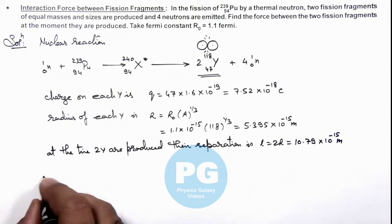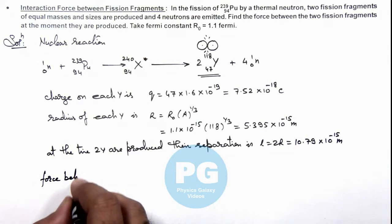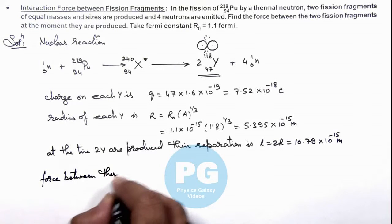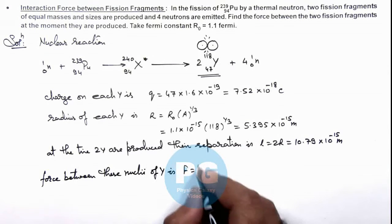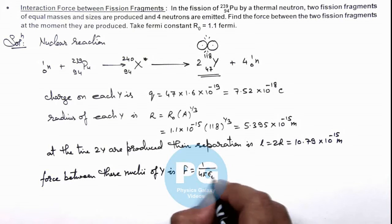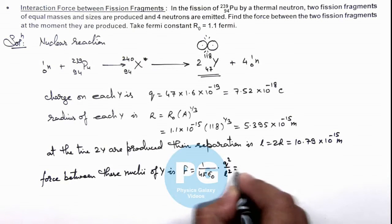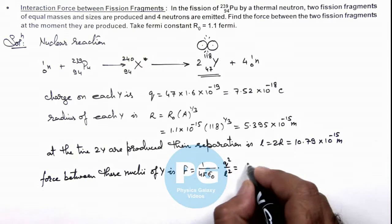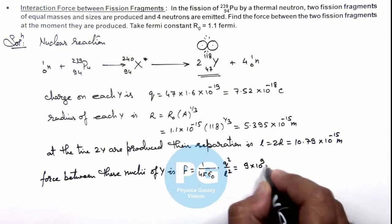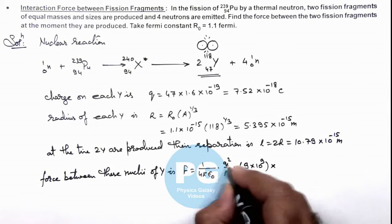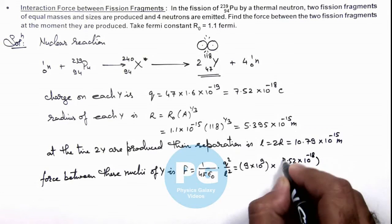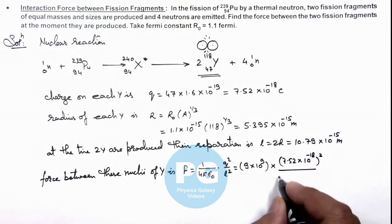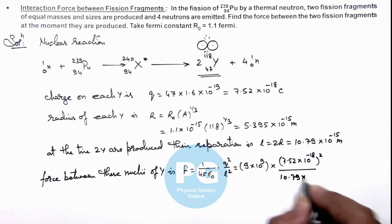Now we can calculate the force between these nuclei of Y. This force we can give by Coulomb's law, which is 1 by 4π epsilon₀, q square by L square. So we can substitute the numerical values: 1 by 4π epsilon₀ in SI units is 9 into 10 to power 9, multiplied by q square is 7.52 multiplied by 10 to power minus 18 whole square, divided by L square is 10.79 multiplied by 10 to power minus 15 whole square.